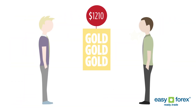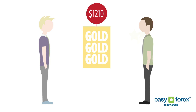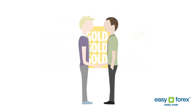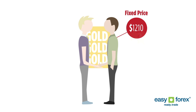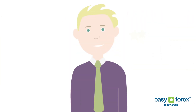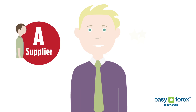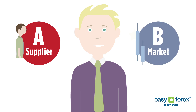To do so, he signs a contract with his supplier, Mike. Mike sells gold to John at a fixed price for a small fee — the premium. On the delivery day, John has two alternatives: he can either buy the gold from his supplier or buy it directly from the market.